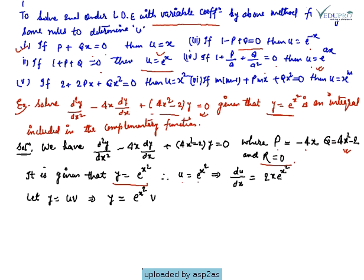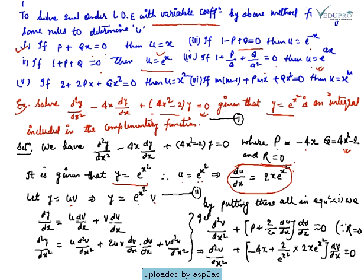Differentiating u = e^(x²) with respect to x gives du/dx = 2x·e^(x²). We suppose y = u·v, so y = e^(x²)·v. Differentiating y = u·v with respect to x, we find dy/dx, and similarly d²y/dx². We then substitute these values into the original equation, as we have already established the method to bring it to linear form.